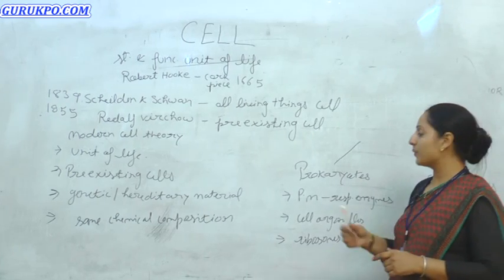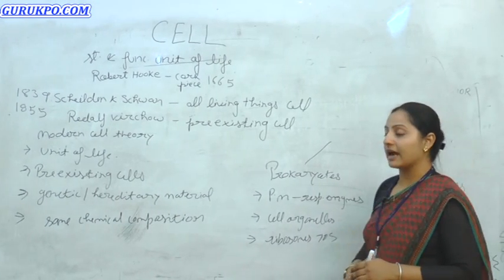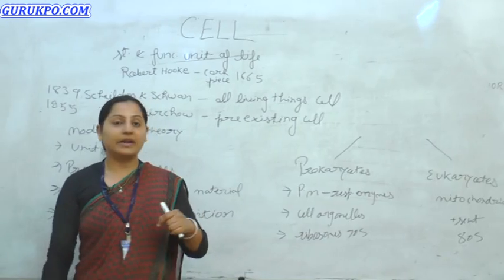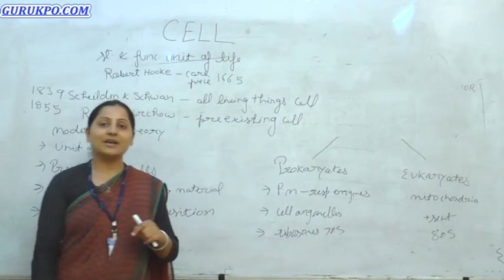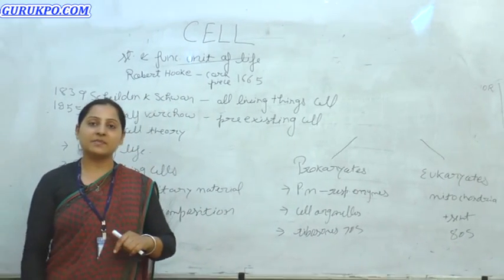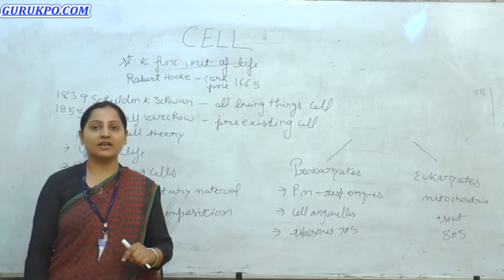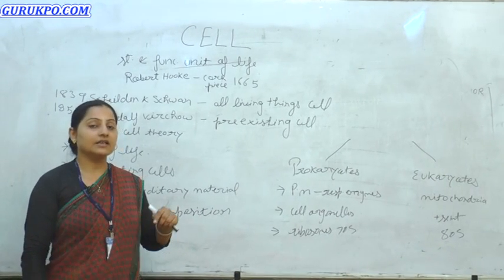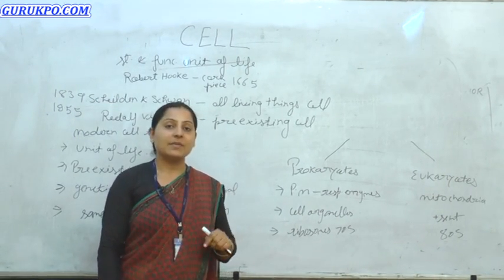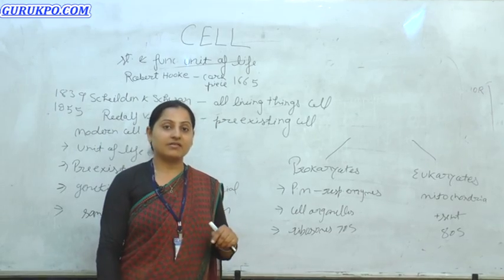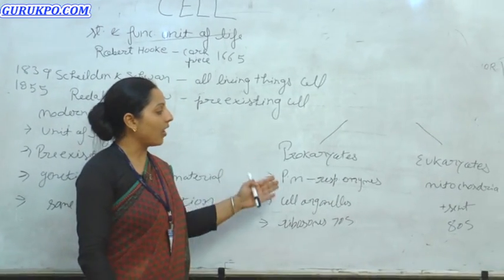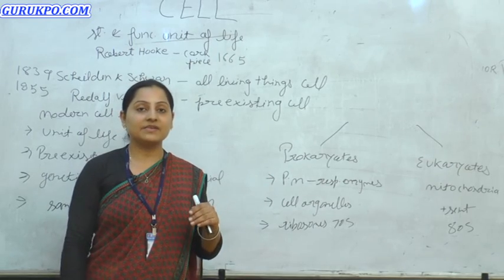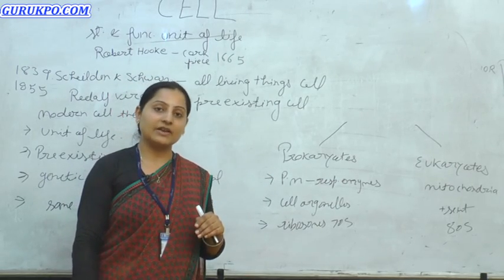The basic differences between both cell types begin with the plasma membrane. In both prokaryotic and eukaryotic cells, a plasma membrane is present. However, a major difference is that in prokaryotes, the plasma membrane contains the respiratory enzymes, whereas in eukaryotes, respiratory enzymes are present in the mitochondria.